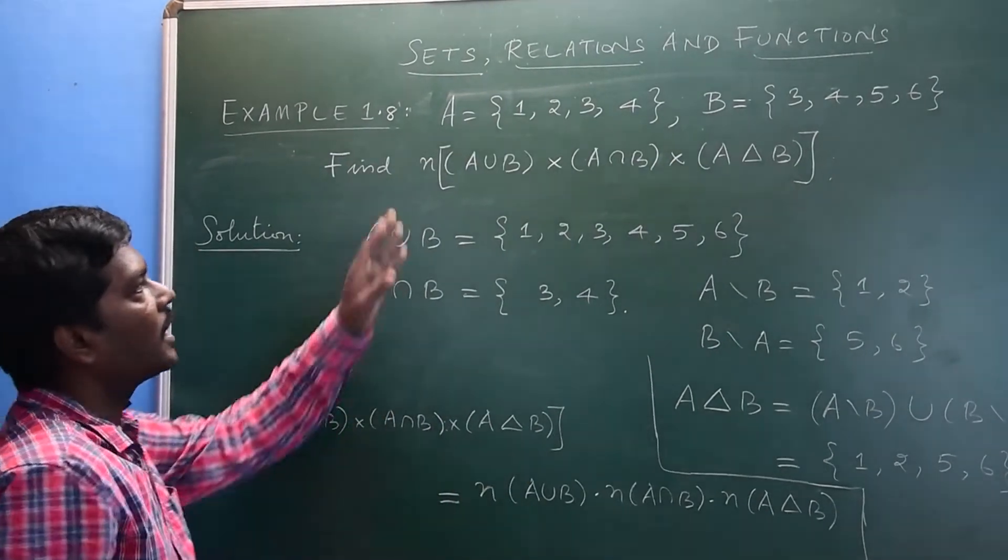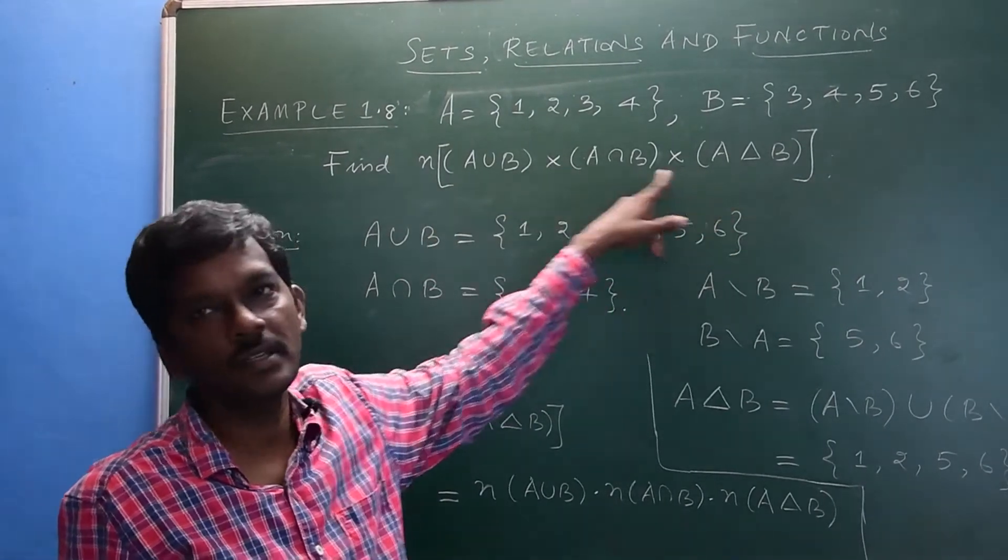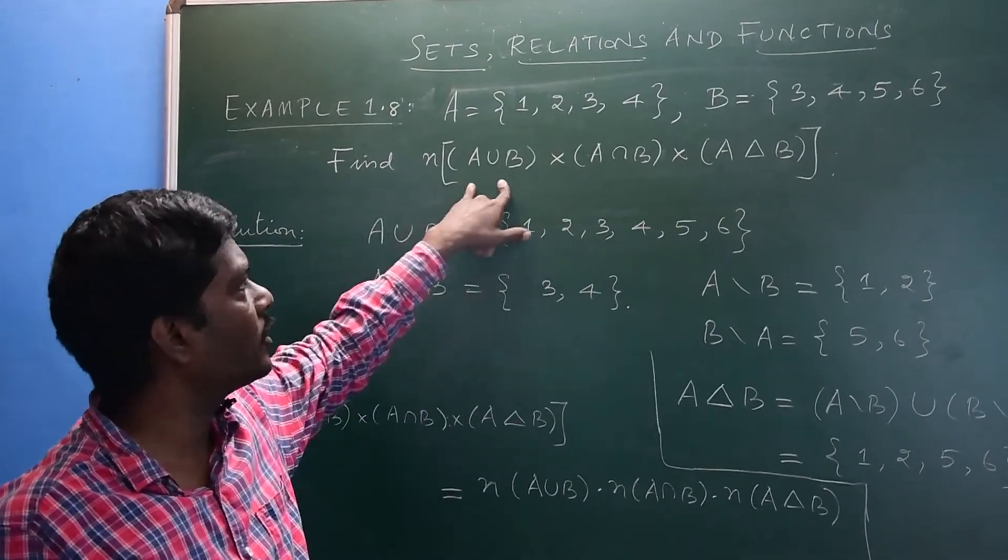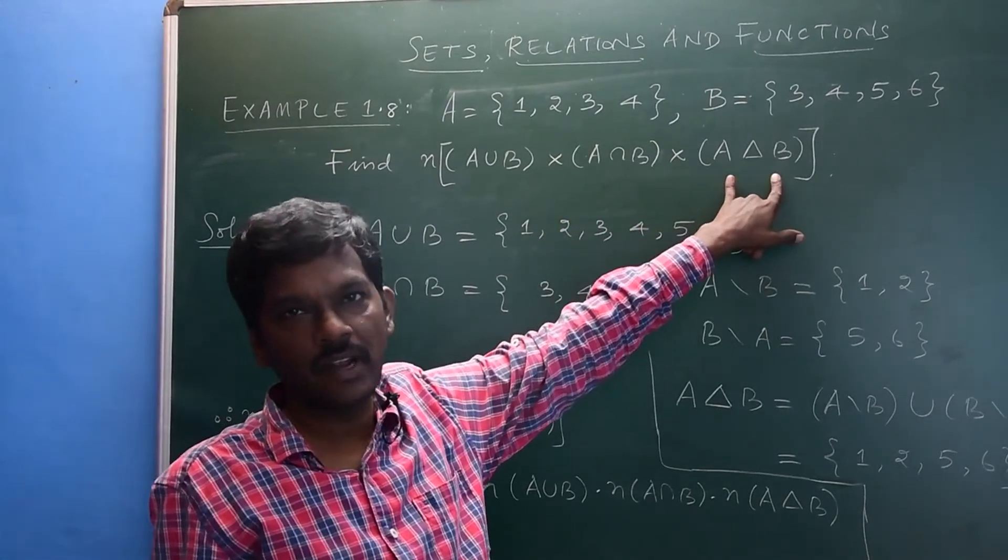And we are asked to find out the cardinality of the Cartesian product of 3 sets. They are A union B cross A intersection B cross symmetric difference of A and B.